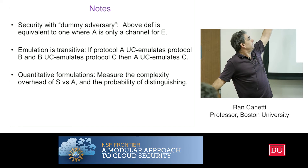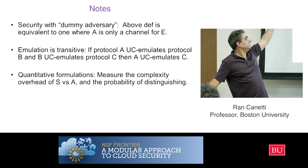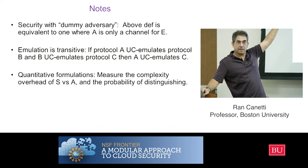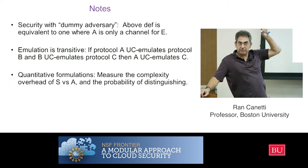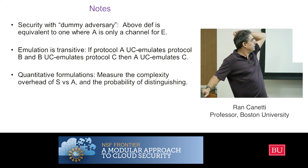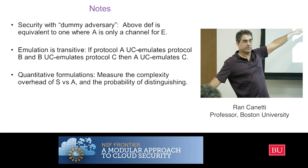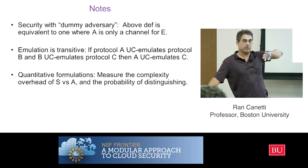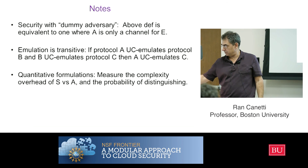Security with a dummy adversary is equivalent to the general definition, as I said before. One thing to notice is that emulation is transitive, just because of the way it's structured. If protocol A UC-emulates protocol B, and B UC-emulates protocol C, then A emulates C. That's not yet composition, but it's transitivity in some sense. You can also have quantitative formulations of this, which measure exactly the complexity overhead of the simulator versus A — how much more does S have to run in order to simulate A, the probability of distinguishing, et cetera. And then you can measure in the composition how much you lose, and you lose whatever you'd expect.